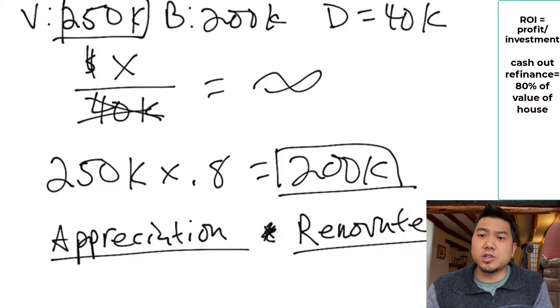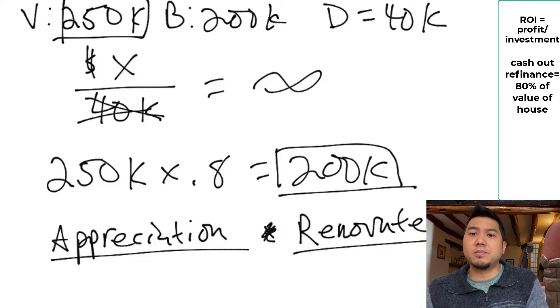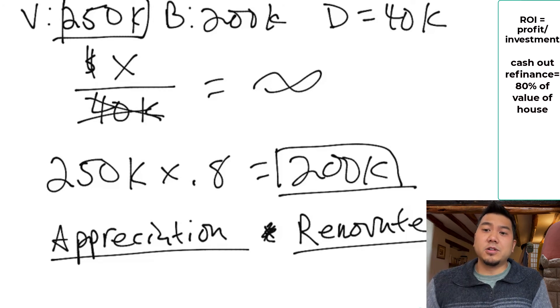Maybe you add a kitchen. Maybe you update the bathroom, a couple of these things, and voila, the value is increased. And then you go to the bank, do a cash out refinance, get all of your money back, rinse and repeat, do it again and again and again.